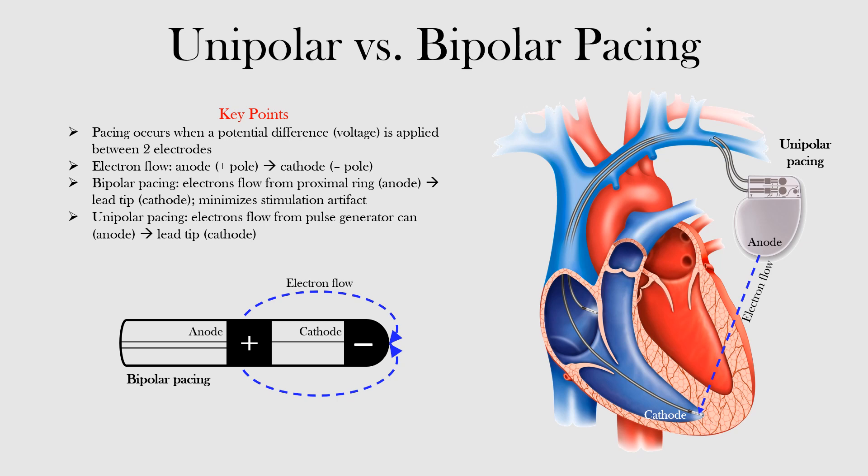With bipolar pacing, the potential difference occurs between the proximal ring, which is the anode, and the lead tip, the cathode. In contrast, with unipolar pacing, the potential difference occurs between the lead tip and the pulse generator, such that electrons flow between the pulse generator and the lead tip.